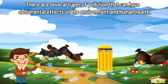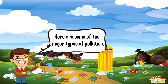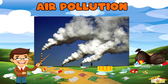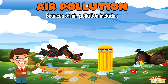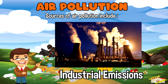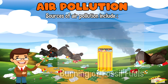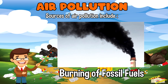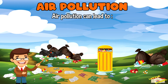There are several types of pollution that can have detrimental effects on the environment and human health. Air pollution refers to the presence of harmful substances in the air, such as gases, particulate matter, and chemicals. Sources of air pollution include industrial emissions, vehicle exhaust, burning of fossil fuels, and agricultural activities.